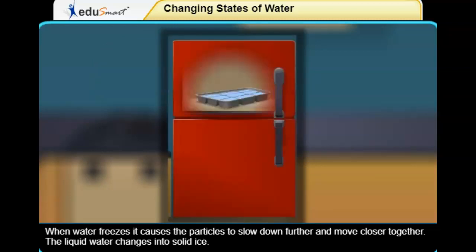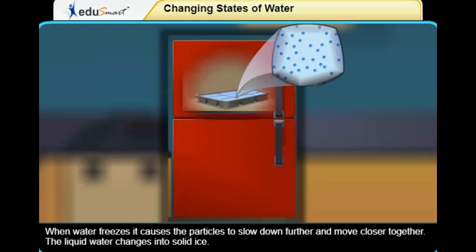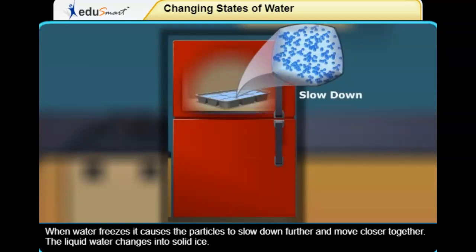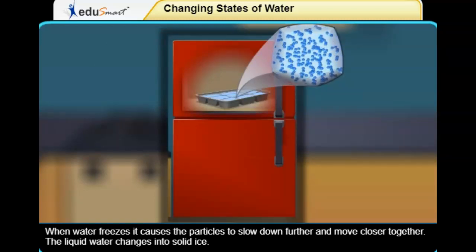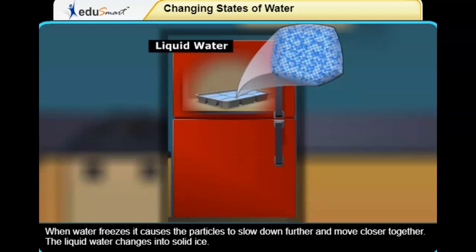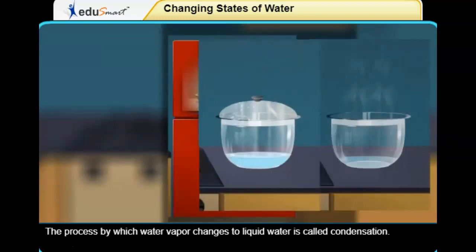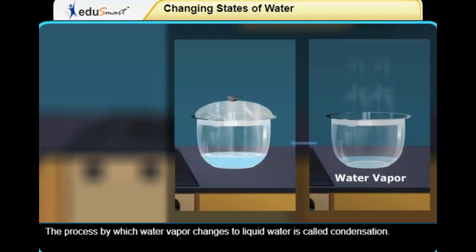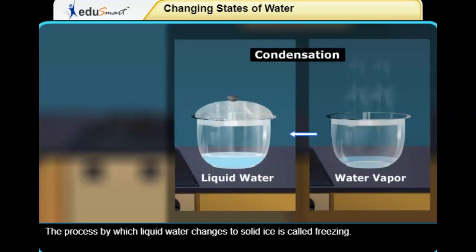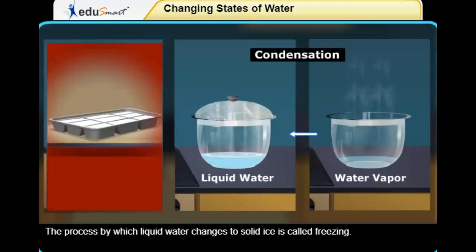When water freezes, it causes the particles to slow down further and move closer together. The liquid water changes into solid ice. The process by which water vapor changes to liquid water is called condensation. The process by which liquid water changes to solid ice is called freezing.